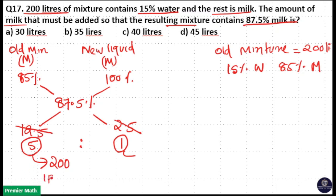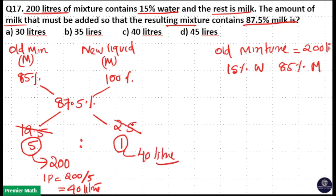5 parts equals 200 liters, so 1 part equals 200 divided by 5, which equals 40 liters. Therefore, the amount of new milk to be added is 40 liters. The answer is option C.